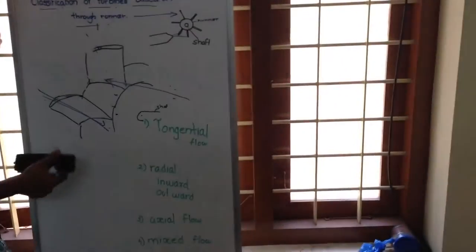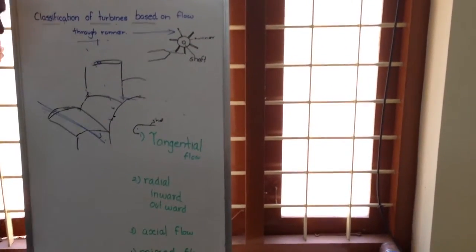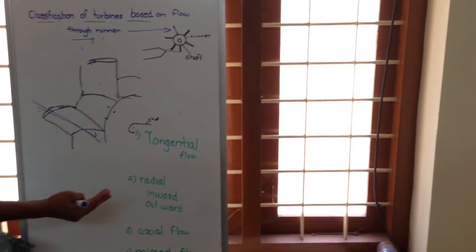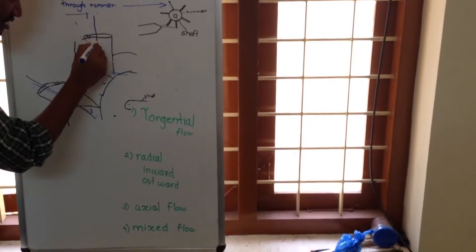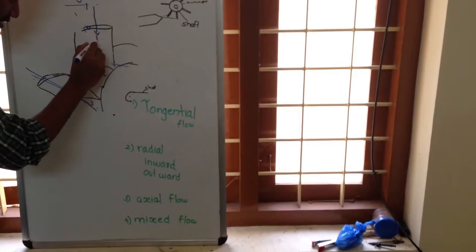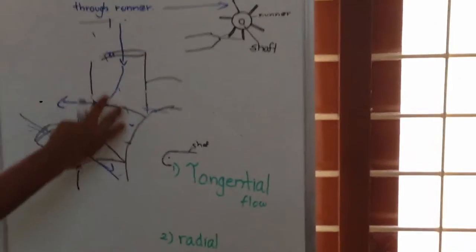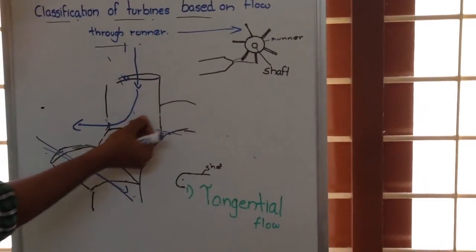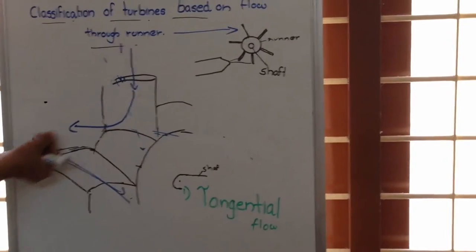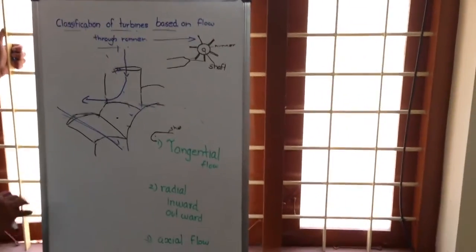Pure radial flow turbine alone cannot occur because water actually enters in some other way. Suppose water is entering in this way — it should move like this and, because of the blade geometry, it will go out like this. Such turbines where water is entering radially but leaving parallel to the axis are called mixed flow turbines.